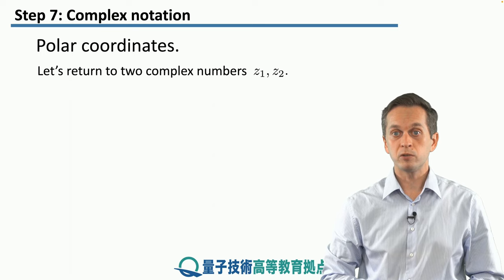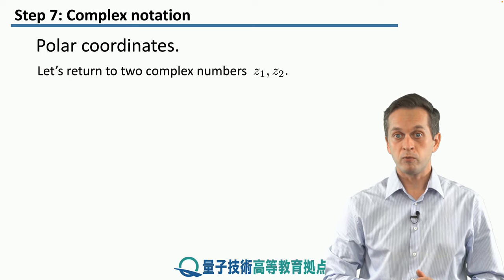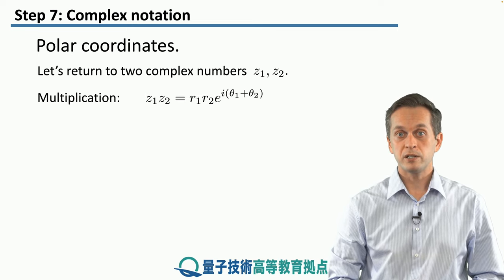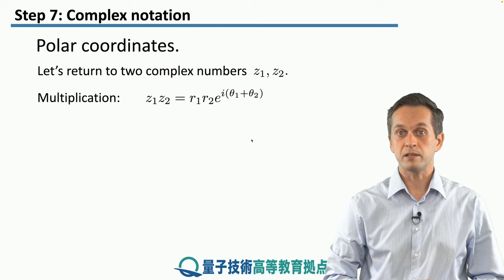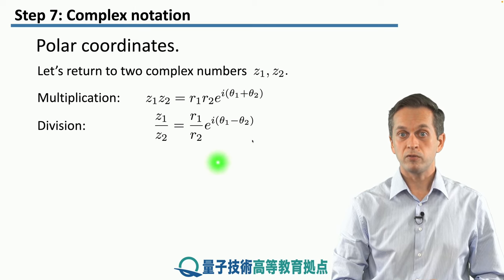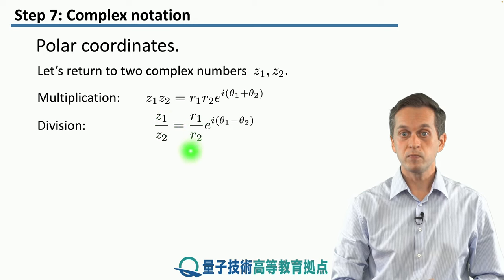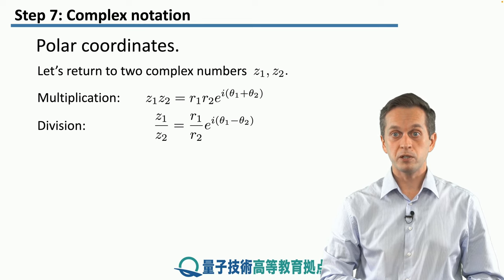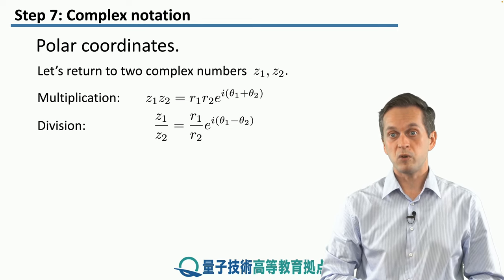Now if we go back to our two complex numbers z1 and z2 represented in terms of their moduli r1, r2 and phases theta1 and theta2, we see that multiplication is now very simple: multiply r1 times r2 and the new phase is theta1 plus theta2. Division becomes equally simple: the new modulus is r1 over r2 and the new phase is theta1 minus theta2. Compared to Cartesian coordinates, these operations are now very simple to handle.